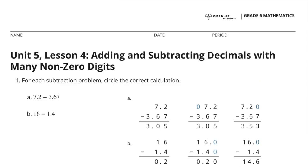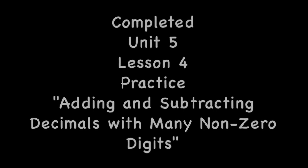Congratulations! You have completed Unit 5, Lesson 4: Adding and Subtracting Decimals with Many Non-Zero Digits.